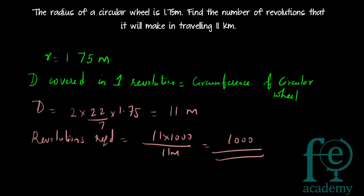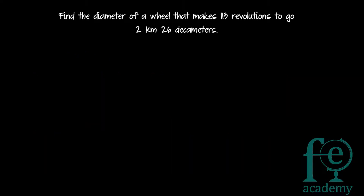To summarize: the distance covered in one revolution equals the circumference of the circular wheel. Since the radius is given, you can find the circumference, then divide the total distance by the distance per revolution to get the number of revolutions. Now the second question: find the diameter of a wheel that makes 113 revolutions to go 2 kilometers 26 decameters.